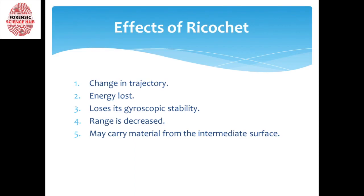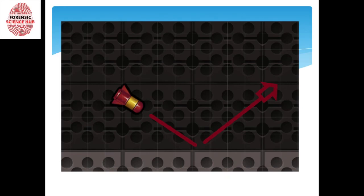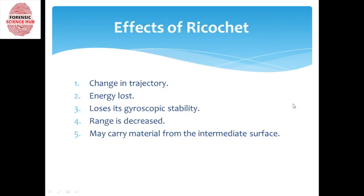Last but not least, the bullet may carry material from the intermediate surface. According to Locard's principle of exchange, whenever an object strikes another object, it's going to exchange material with it. So when this bullet strikes the intermediate surface, it's going to take some material from that surface onto its own surface and then bounce off. These are the five main effects of ricochet.